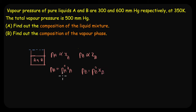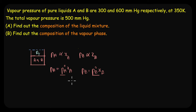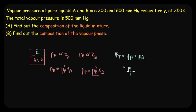The proportionality constants PA° and PB° refer to the vapor pressure of the pure liquids A and B at the same temperature. The total pressure exerted on the solution phase is simply the sum of the partial pressures of both components: P_total = PA + PB, where PA = PA°·XA and PB = PB°·XB.